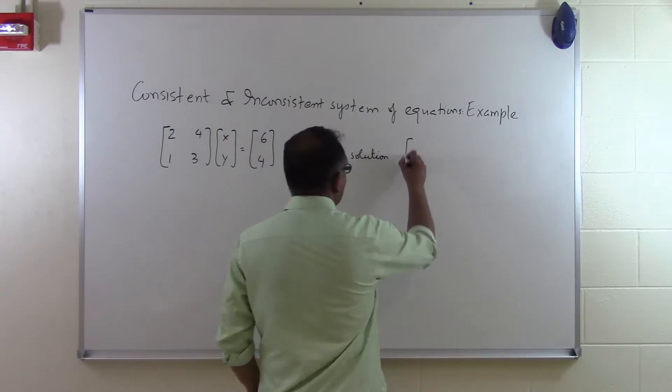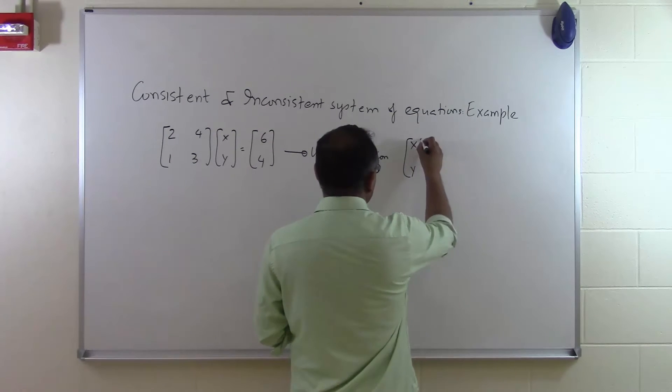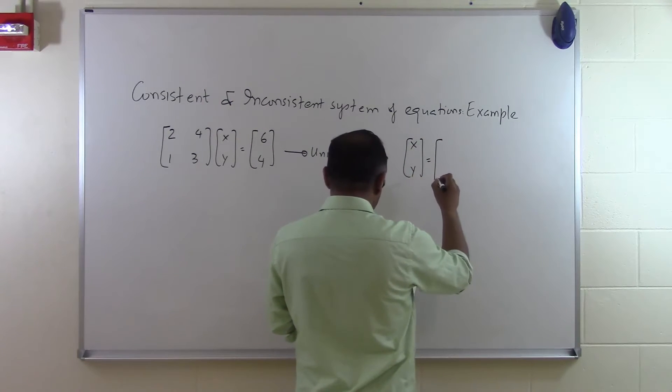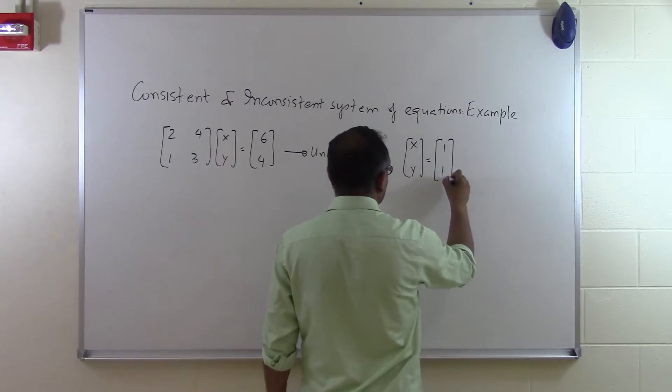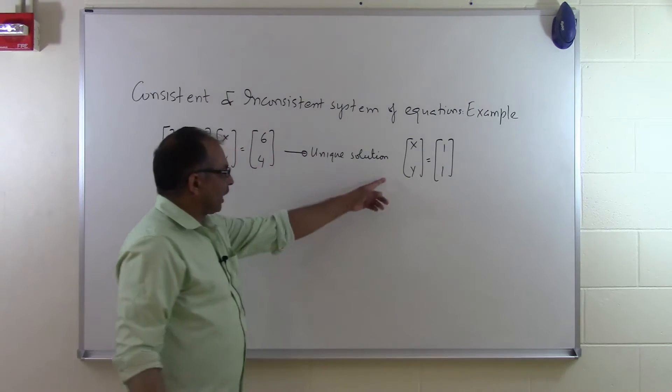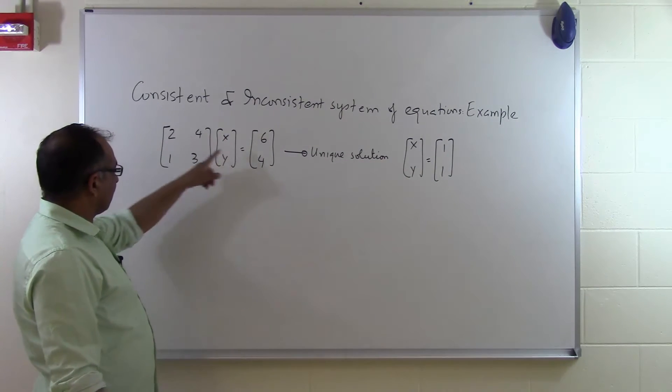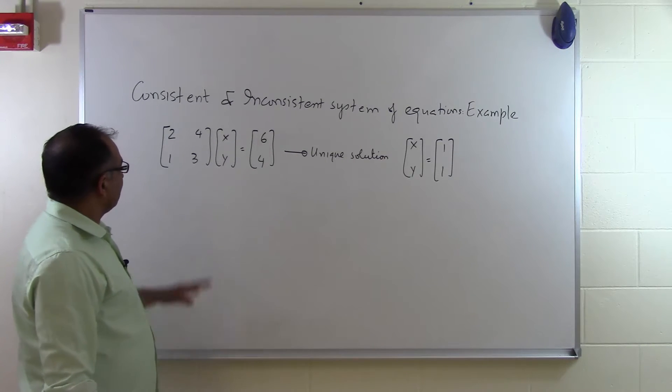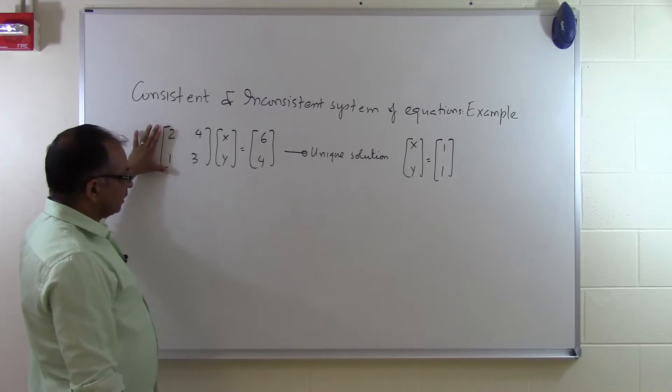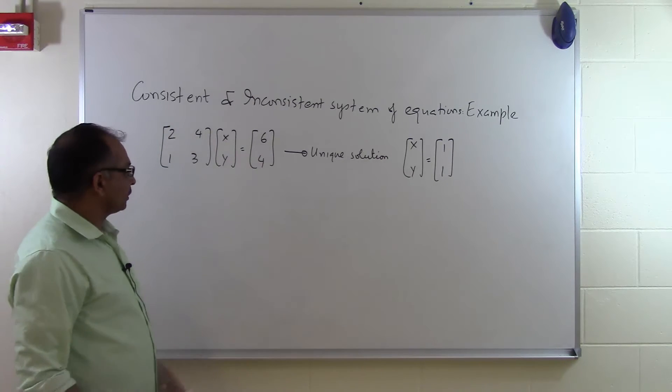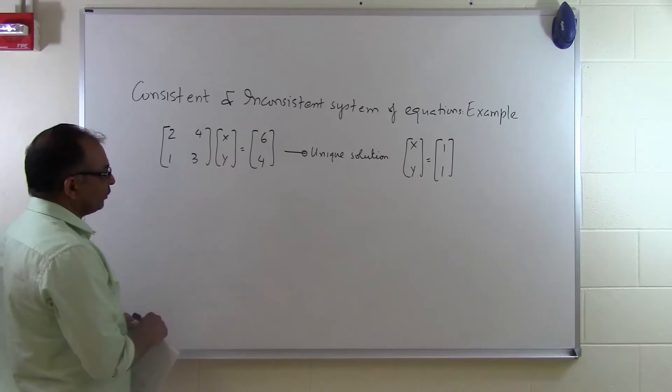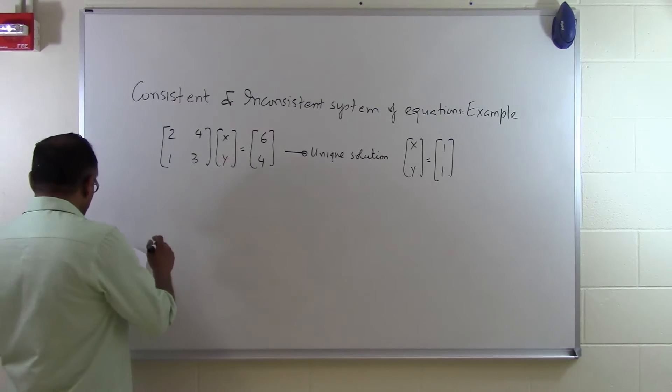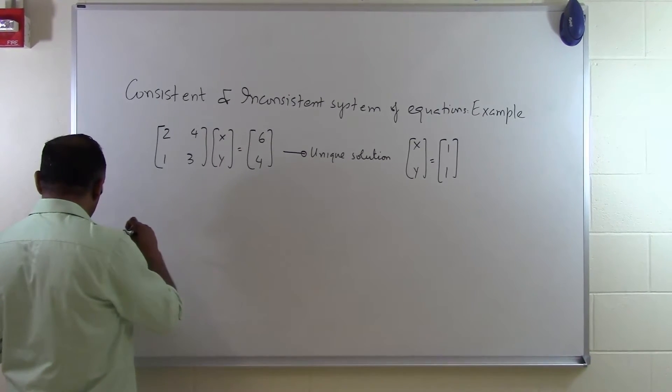And if you are going to solve these equations, 2 unknowns and 2 equations, by any method you will get [1, 1] as a solution. You can also verify that if I substitute 1 and 1 here I will get 6 and 4. So that is one of the solutions, but it is a unique solution. We consider this system of equations to be consistent because it has a solution, and that solution is unique.